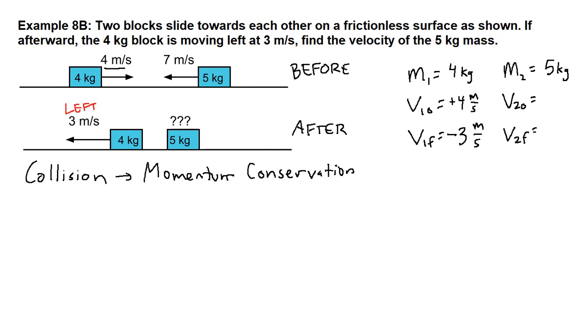The 5-kilogram block at the beginning of the picture, the beginning before the collision, is also moving left, which means that that 7 should be a negative 7 meters per second when we're going from the speed information to the full velocity information.